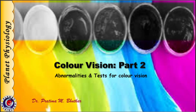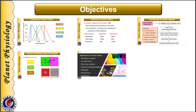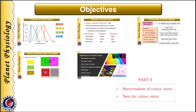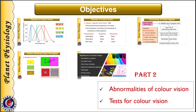Hi, this is Pratima from Planet Physiology. In the first part of color vision, we have studied theories of color vision, how color signals are processed, how illumination and background color affects color perception, and significance of color vision. Today we shall learn clinical aspects related to color vision, i.e. abnormalities of color vision and tests for color vision.